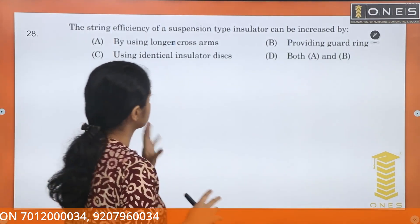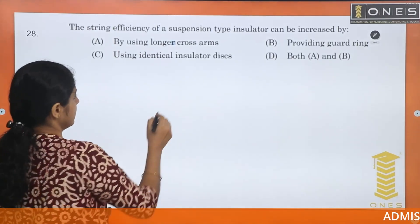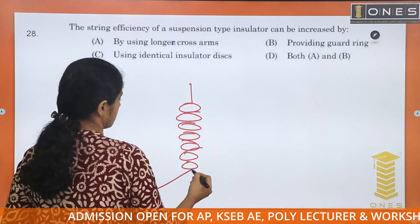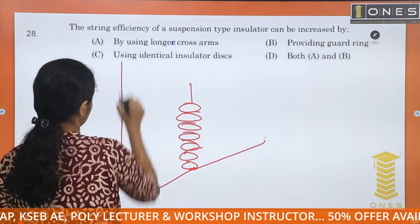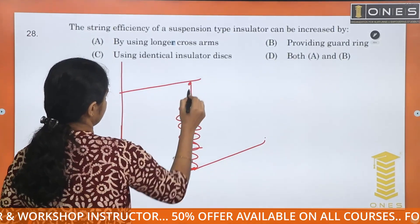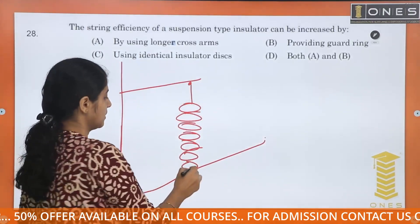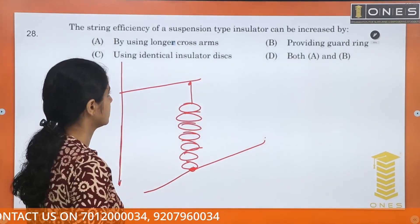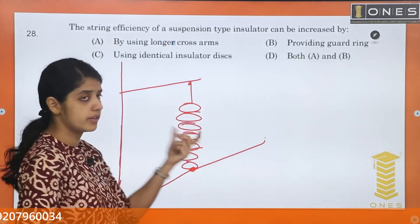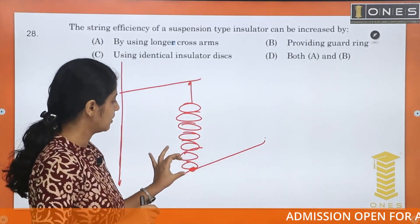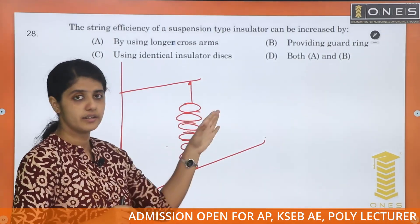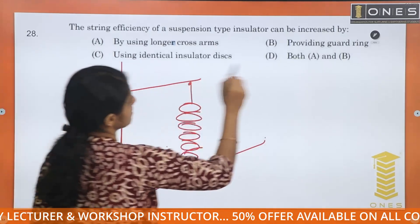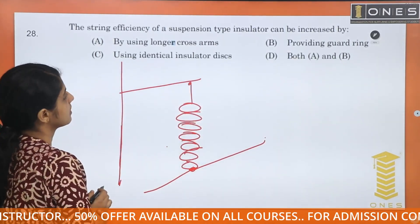The string efficiency of a suspension type insulator can be increased by: using longer cross arms, providing guard rings, and using identical insulator discs. Both options A and B are relevant methods.